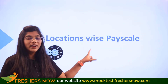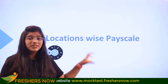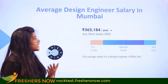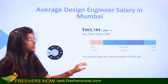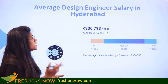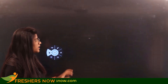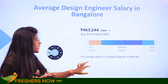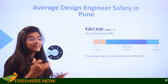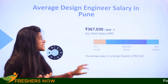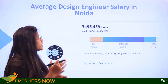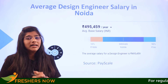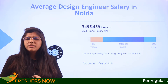Looking at how major locations in India are paying design engineers: Mumbai pays 3,65,000 per annum; Hyderabad pays 3,33,000; Bangalore pays 4,63,000; Pune pays 3,67,000 per annum; and Noida pays 4,95,000 per annum. These figures will differ from company to company depending on your skills and hands-on experience.